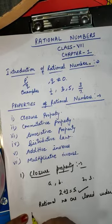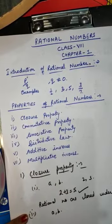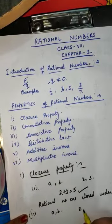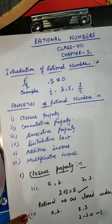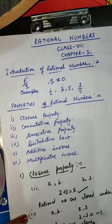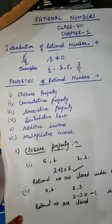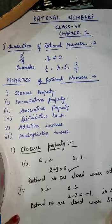The second part is: if A and B are two rational numbers, then their subtraction is also a rational number. This means rational numbers are closed under subtraction.